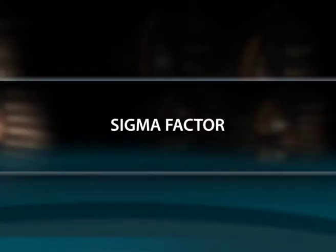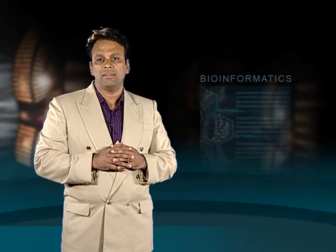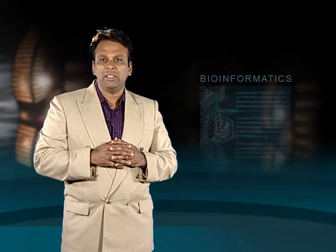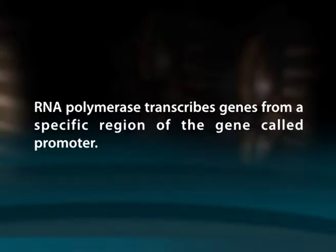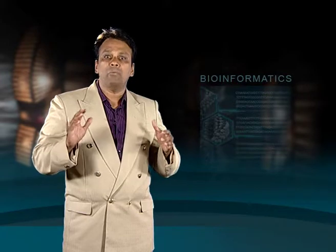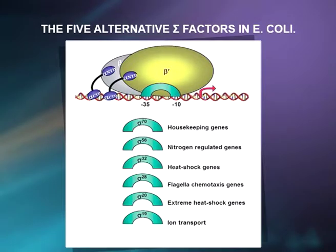Sigma factor is a protein needed only for initiation of transcription or RNA synthesis. It is a bacterial transcription initiation factor that enables specific binding of RNA polymerase to gene promoters. RNA polymerase transcribes genes from a specific region called the promoter. The sequences at minus 10 and minus 35 in the promoter region are important for binding of RNA polymerase in prokaryotes. The RNA polymerase holoenzyme is formed by the association of sigma factor with core polymerase, which helps in promoter selection at the initiation of transcription.